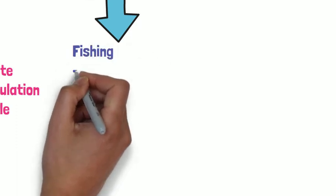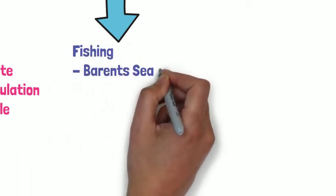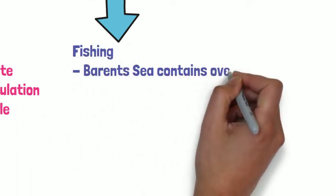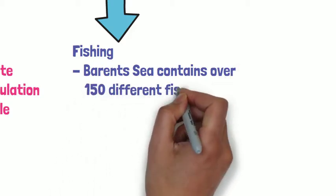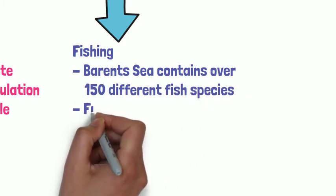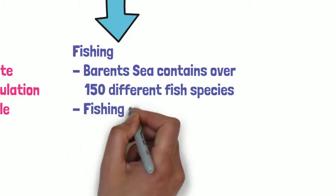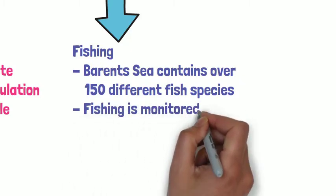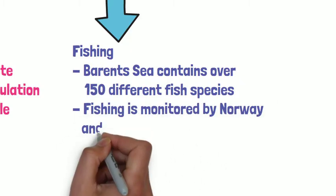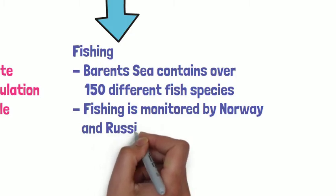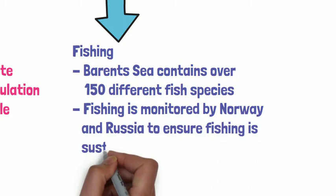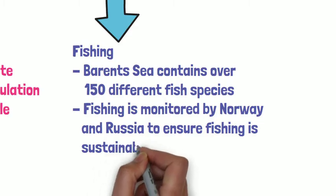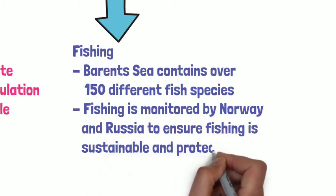Our third opportunity is fishing. The Barents Sea contains over 150 different species of fish. Fishing is usually monitored by the Norwegian and Russian governments to ensure that fish stocks don't get depleted and that fishing is sustainable, so it will be there for the future.